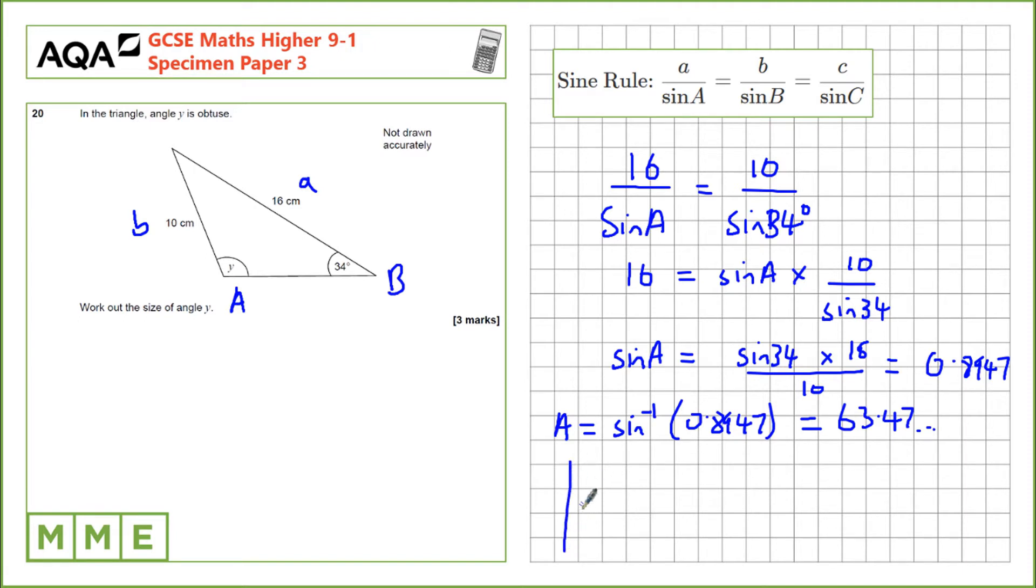So the best way to do that is to look at the graph of sine. So we know this point here is 180. If we've got 63 degrees, that's the value here. And there's a corresponding value with the same value of sine over this side.